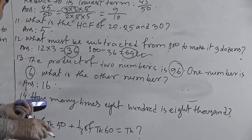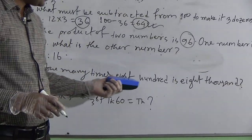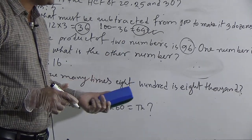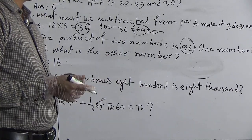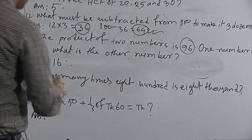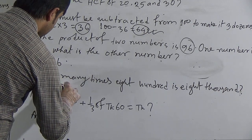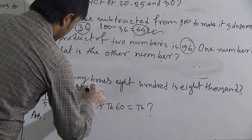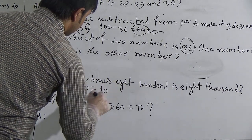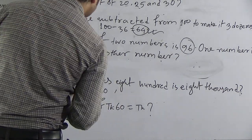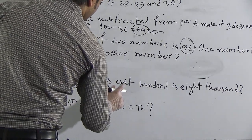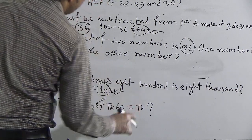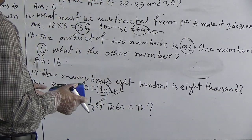Question 14: How many times is 800 in 8000? We divide 8000 by 800, which gives 10. Our required answer for this question is 10.